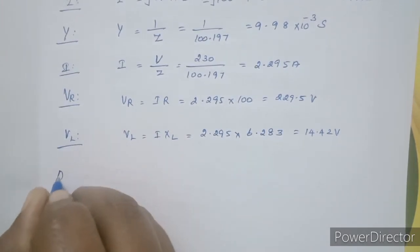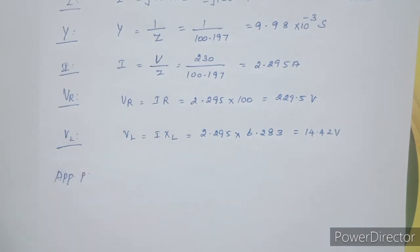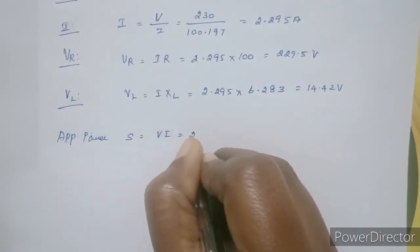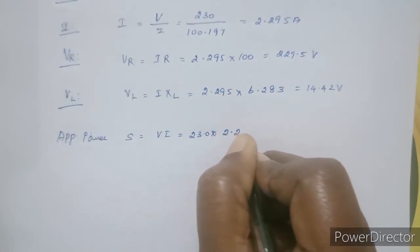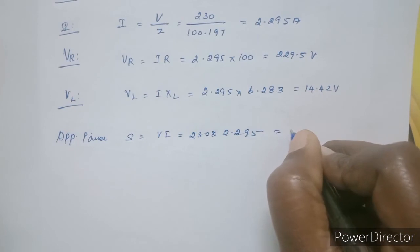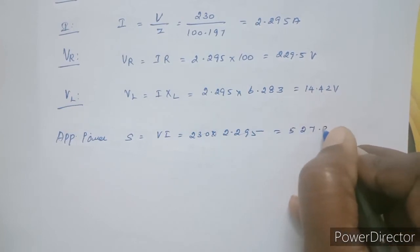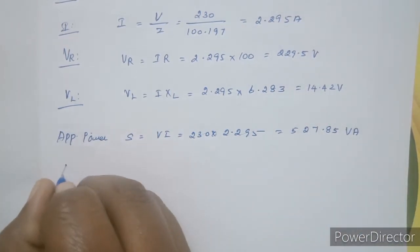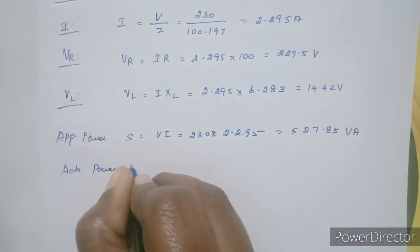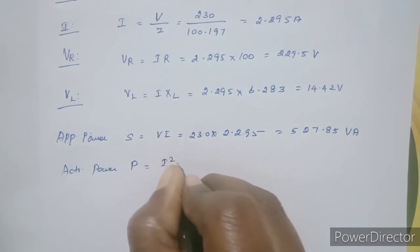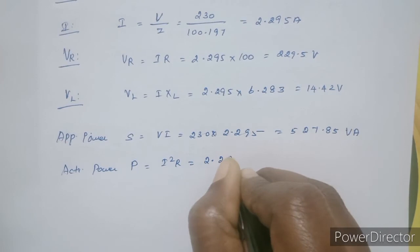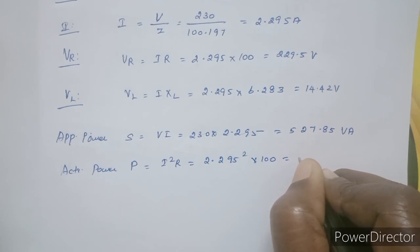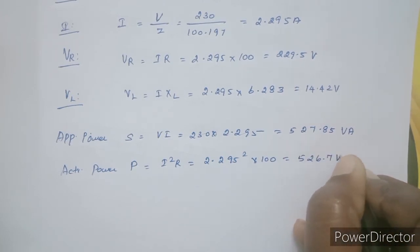Apparent power S equals V times I. S = 230 × 2.295 = 527.85 VA. Active power P equals I²R. P = 2.295² × 100 = 526.7 watts.